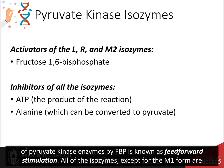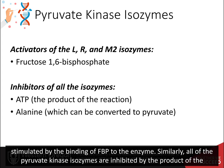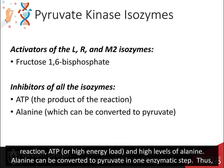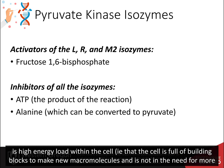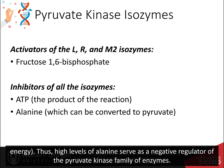All of the isozymes except for the M1 form are stimulated by the binding of fructose bisphosphate to the enzyme. Similarly, all of the pyruvate kinase isozymes are inhibited by the product of the reaction, ATP, or high energy load, and high levels of alanine. Alanine can be converted to pyruvate in one enzymatic step, so pyruvate serves as a metabolic intermediate in the formation of alanine. If high levels of alanine are present, this indicates high energy load within the cell, such that the cell is full of building blocks to make new macromolecules and is not in need of more energy. Thus, high levels of alanine serve as a negative regulator of the pyruvate kinase family of enzymes.